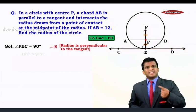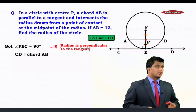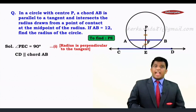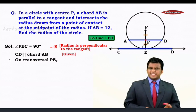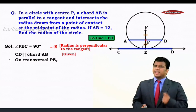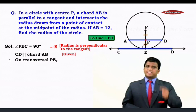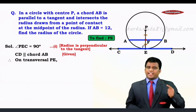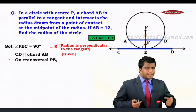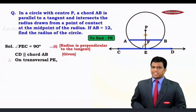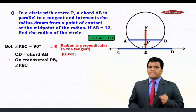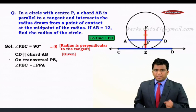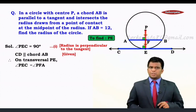But we further know that CD is parallel to the chord AB. This is given. And children, on the transversal PE, we see a special pair of angles. We see a pair of corresponding angles that is angle PEC and angle PFA. Now because the lines are parallel, we know the relation between the corresponding angles, they are equal. Hence, we say angle PEC is equals to angle PFA. Let this be result number 2. The reason is corresponding angles.